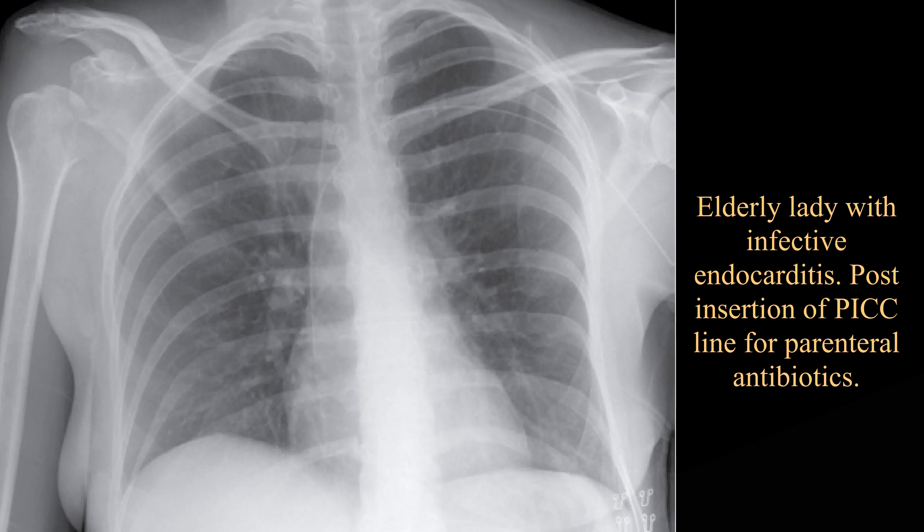The findings would be suggestive of an inflammatory process in the right glenohumeral joint. With the history of infective endocarditis, septic arthritis is a major consideration. Reactive arthritis or other inflammatory arthritis are differential diagnoses. I would like to look at previous imaging of the chest and shoulder. The patient should have a joint aspirate and x-ray examination of the shoulder.